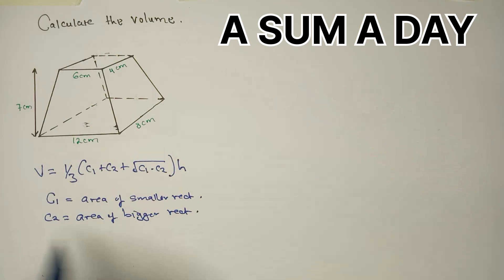Now let us find the area of the smaller rectangle. So C1 will be 6 times 4 which is 24. Then C2 is 12 times 8 which is 96.